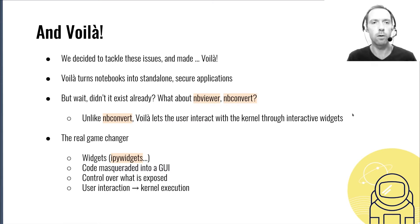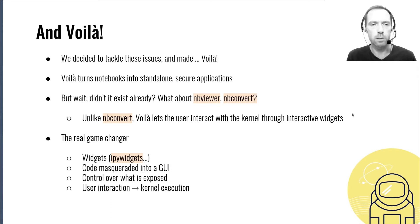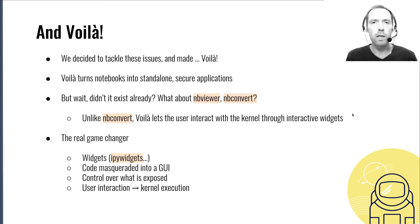You may wonder if we didn't have that already with tools such as NB Viewer or NB Convert. You can use NB Convert to produce an HTML document from a notebook and serve it on the internet, but it will only be a static document and the user won't have the ability to interact with your web page. What really makes Voila special is its support for widgets such as IPy widgets for Python. You can really see widgets as code masqueraded into a GUI — for example, the user can move a slider which will trigger some code in the kernel. But the creator of the dashboard has complete control over what is exposed to the user, so the user can't run any arbitrary code, which fixes the safety issue mentioned earlier.